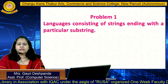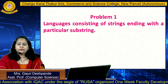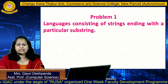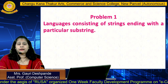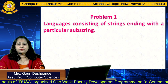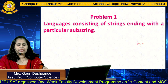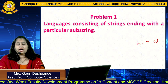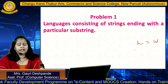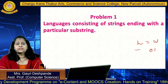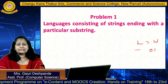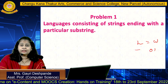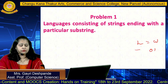The first problem is: how to construct a DFA for a language consisting of strings which end with a particular substring. If your language L consists of some strings, say 'aw', where w consists of some strings that can end with a particular string, how do we construct the DFA for that language? To construct a DFA, we have to follow some steps.